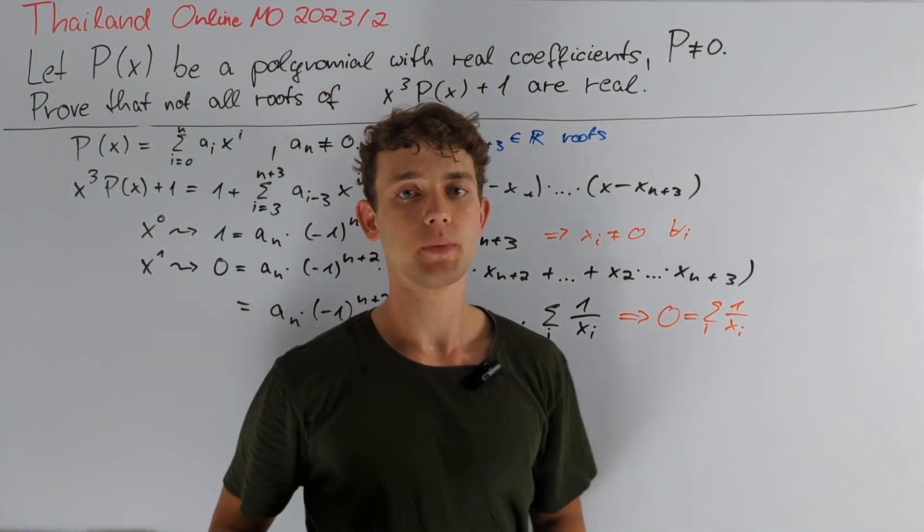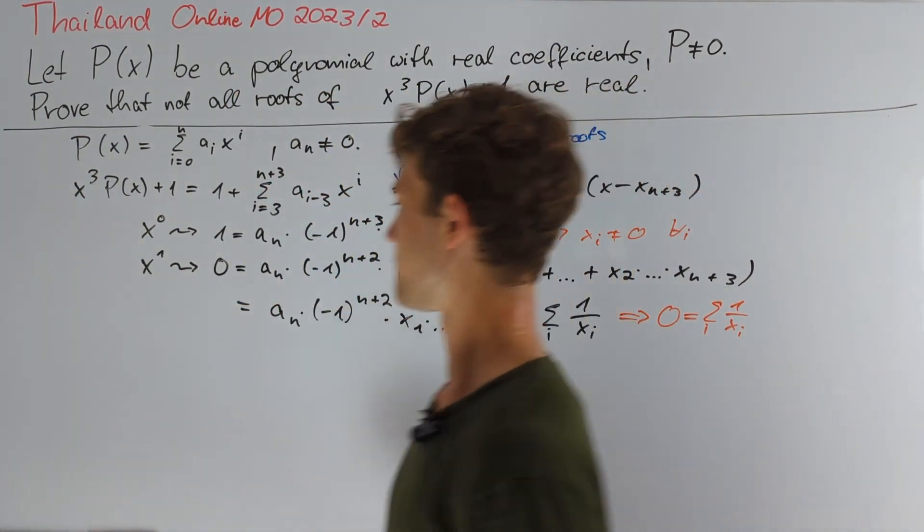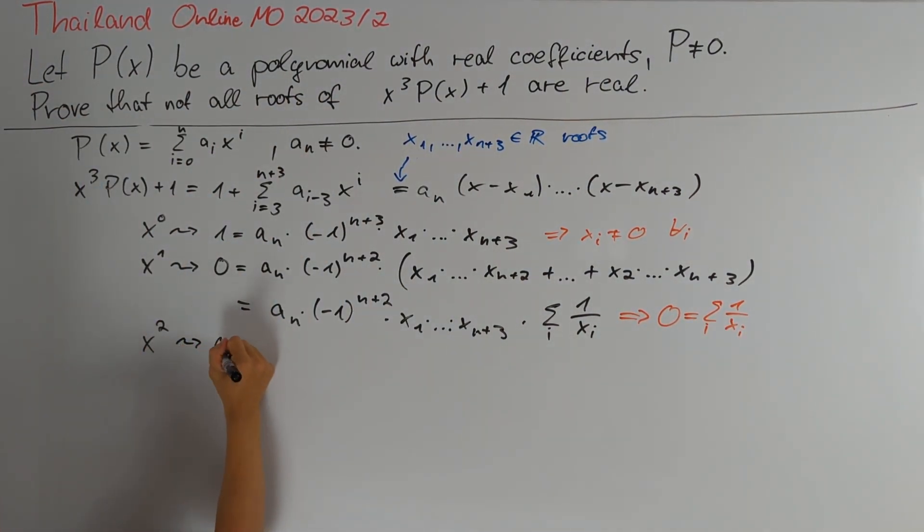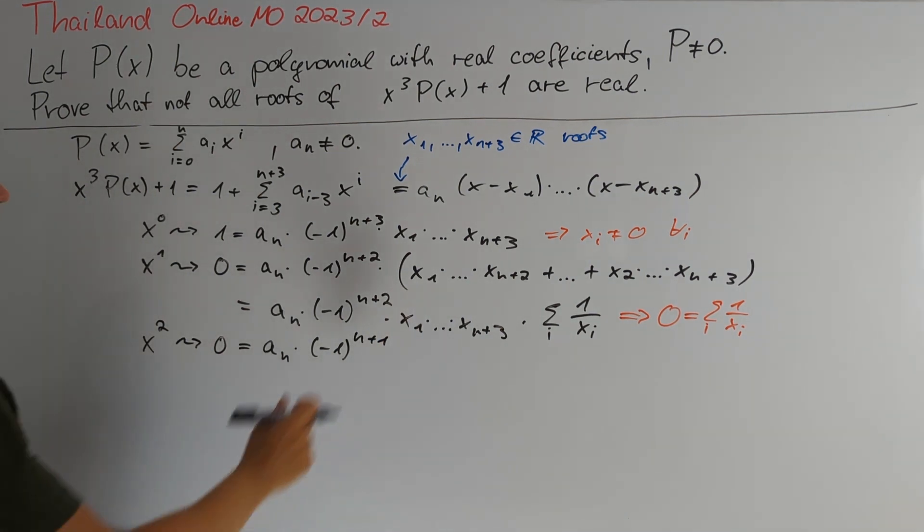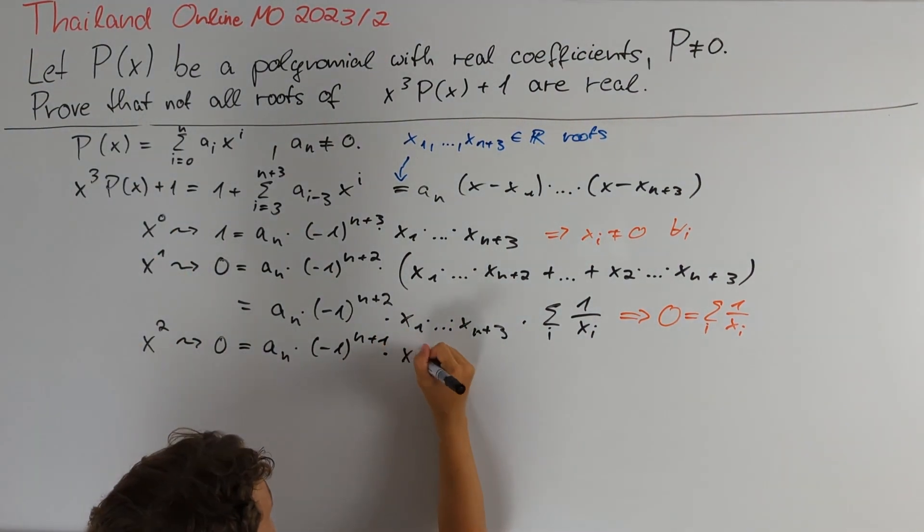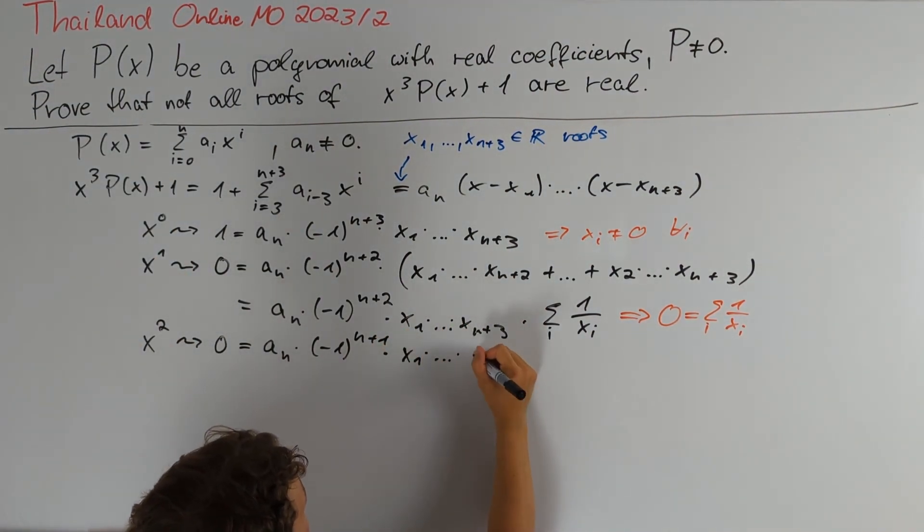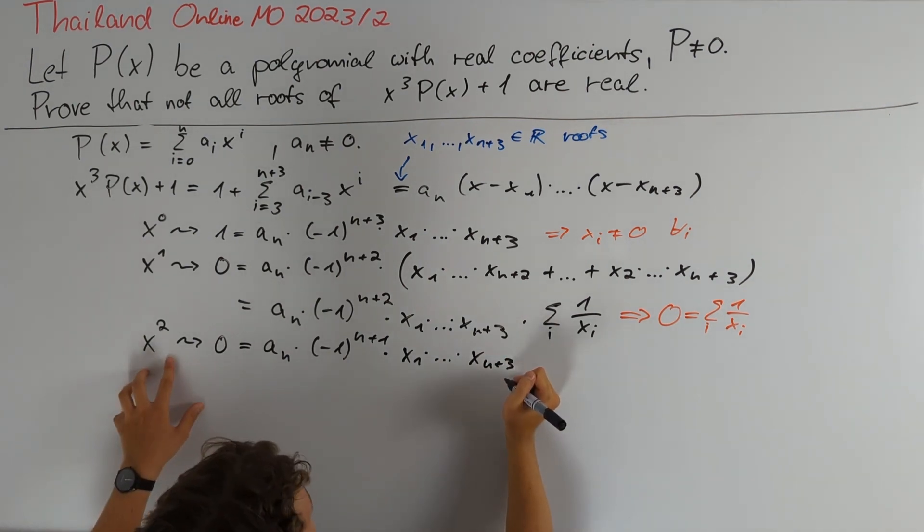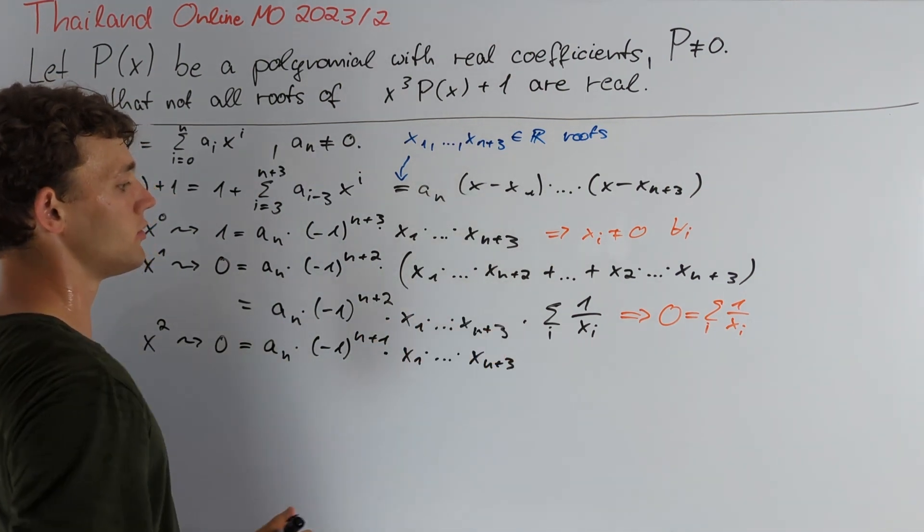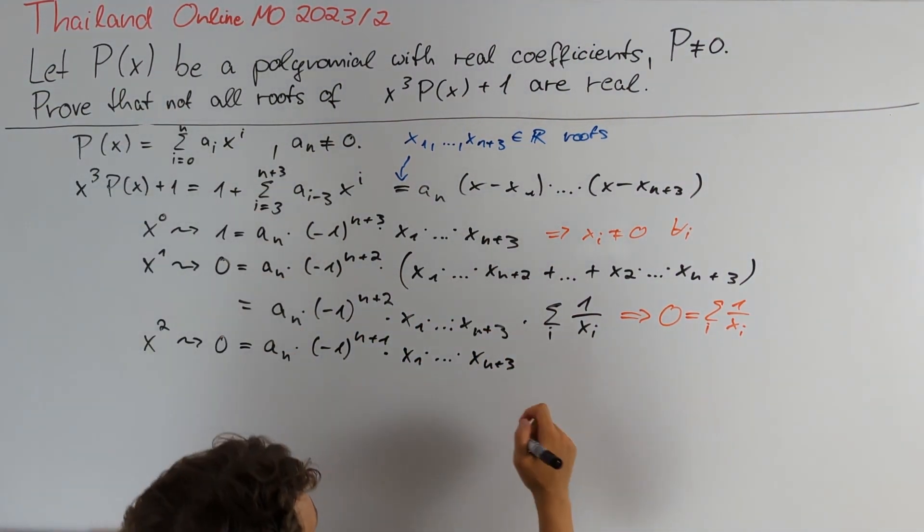But we are not done yet because we can do the same thing for x to the power of 2, which tells us that 0 is equal to aₙ times (-1) to the power of n+1 times some other sum. But instead of writing it down in this way, we immediately factor out the product x₁ times all the way up to times xₙ₊₃. And for x to the power of 2, here we sum the products where we always leave out two of the summands. So after factoring this out,